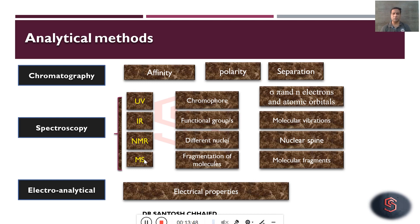Mass spectrometry — where we do not use radiations but we break the molecule under controlled conditions by using, sometimes, an electron beam in the spectrometer. We literally fragment the molecule and measure the mass-to-charge ratio of those fragments. When we compile these fragments, we get the molecular weight and molecular structure of the compound. This is how these techniques are useful, and understanding them requires knowledge of organic chemistry.